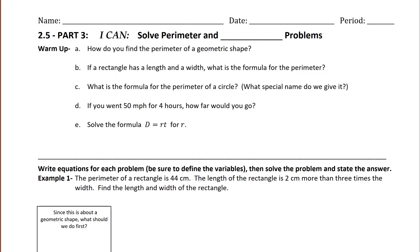In section 2.5, we've been solving systems of equations in context. We're going to continue that with a different variety of problems. We're going to write down the 'I can' statement: I can solve perimeter and distance problems. Let's go through the warm-up just to remind us of a few things.